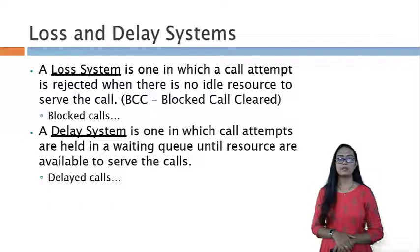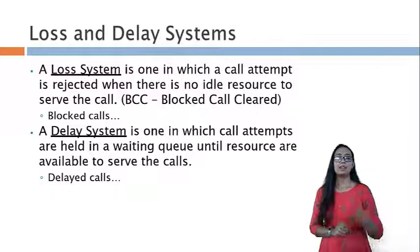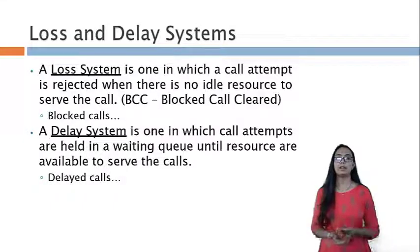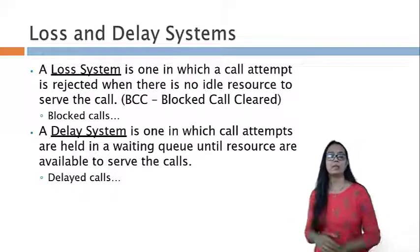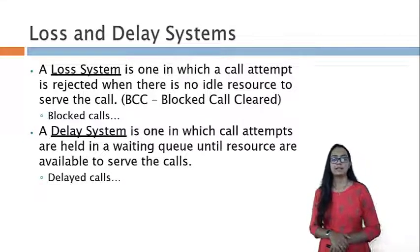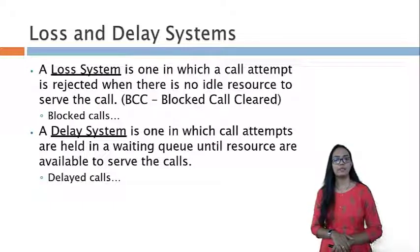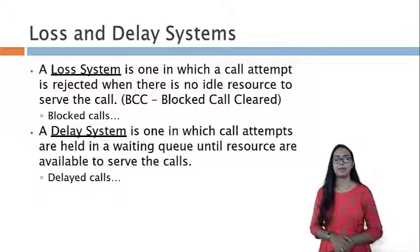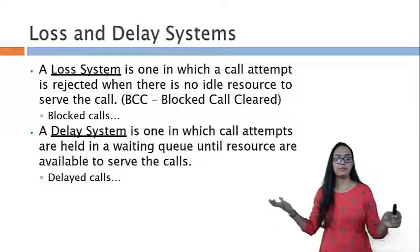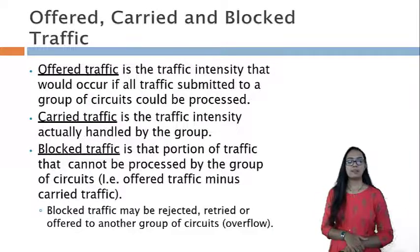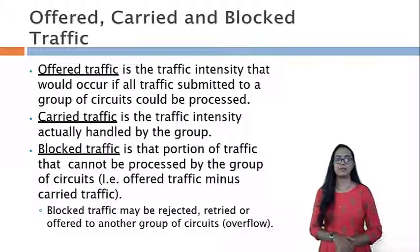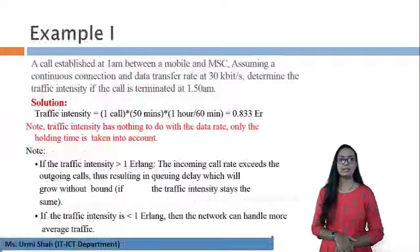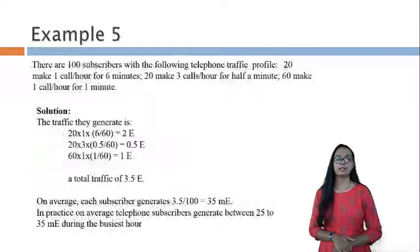A loss system is one in which a call attempt is rejected when there is no idle resource to serve it — that is, blocked call clear. If no line is available, the initiated call is disconnected. A delay system is one in which call attempts are held in a waiting queue until resources become available — that is, call waiting. Traffic intensity and its units will be discussed in more depth in the next session.